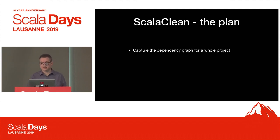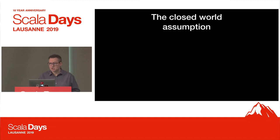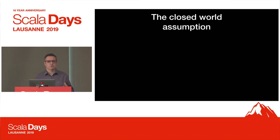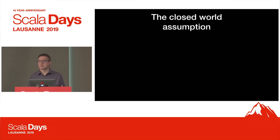So what's the plan? The plan's easy: capture the dependency graph for the whole project. It's practically CSVs - it's just a list of references. And use that analysis to do interesting things. There is a challenge here. This is whole programme analysis, which means you need to have a closed world assumption. If I'm analysing a programme and I want to say this method is unused, I need to have all possible callers of that method within the scope of the thing I'm looking at. Otherwise I'm lying to myself.